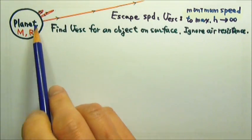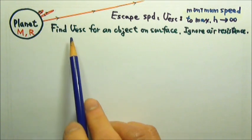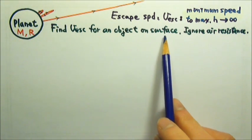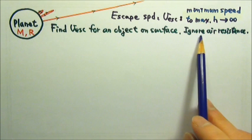Now consider a planet with mass M and radius R. Find the escape speed for an object on the surface of that planet. Ignore air resistance.